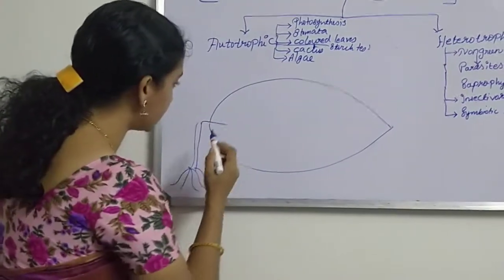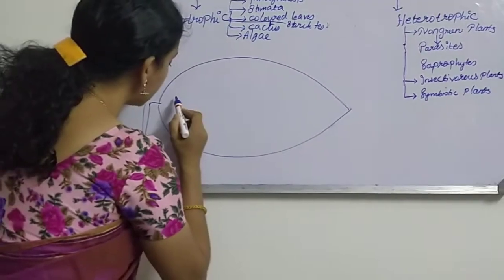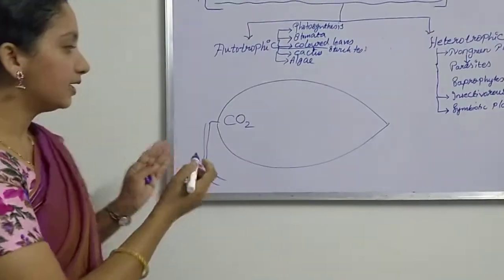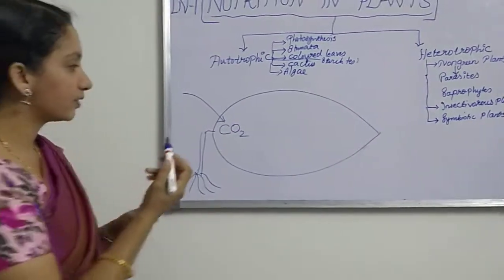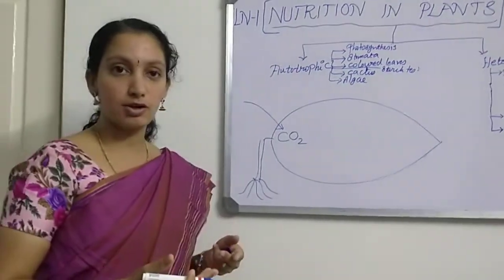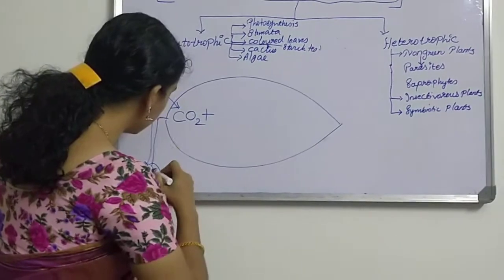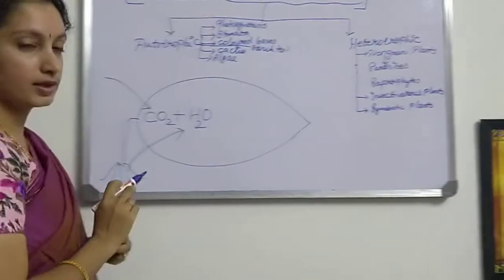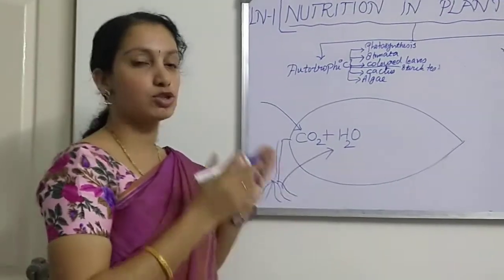First, Carbon Dioxide (CO2) — I am using chemical formulas to save space. Carbon Dioxide is taken from air, which is the gas liberated after the respiration process. Then from the root, the plant takes water, H2O. These are the two main raw materials required by the plant to produce food.